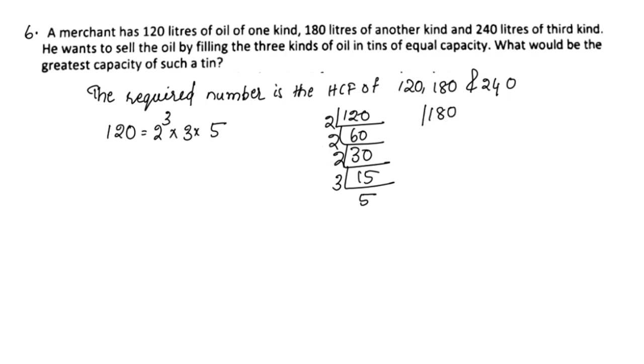180: 2 into 90, again 2 into 45, again 3 into 15, 3 into 5. So 180 equals 2² × 3² × 5.